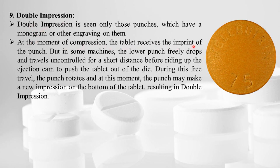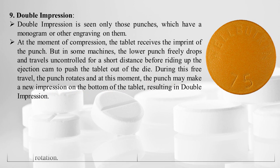At the moment of compression, the tablet receives the imprint of the punch. However, in some machines, the lower punch freely drops and travels uncontrolled for a short distance before riding up the ejection cam to push the tablet out of the die. During this free travel, the punch rotates slightly, and this movement may make a new impression on the bottom of the tablet, resulting in double impression.